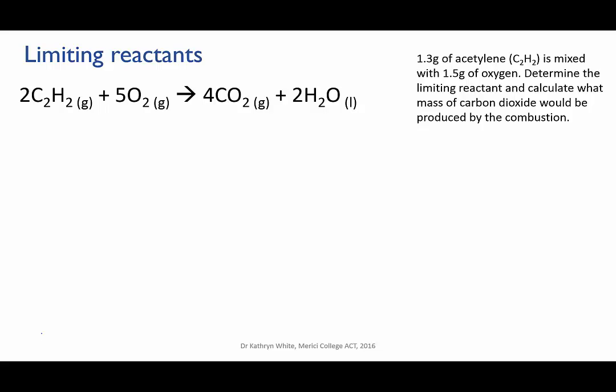Getting the oxygen-fuel mixture right in a welding torch is really important in order to get the hottest possible flame. Say we're going to combust 1.3 grams of acetylene with 1.5 grams of oxygen. Determine which is the limiting reactant, and then calculate what mass of carbon dioxide would be produced.